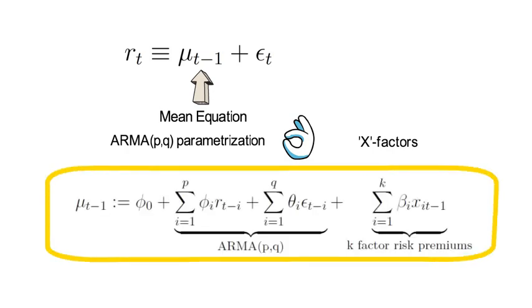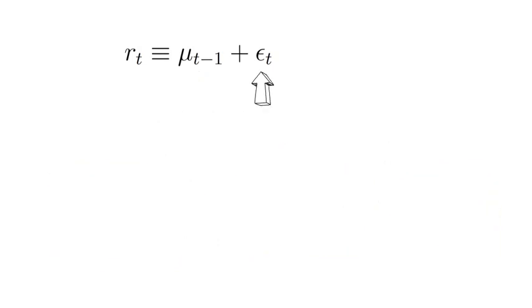Once the mean equation has removed all serial dependence in the realized return rt, we continue to specify the variance equation. For that, we square the realized unexpected return innovations, εT, and ask whether there is serial correlation in εT squared.